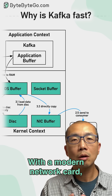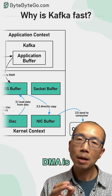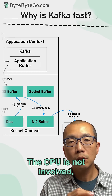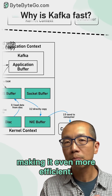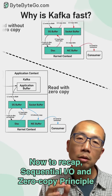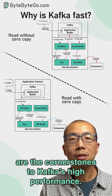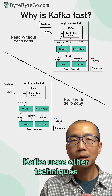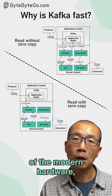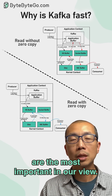With a modern network card, this copying is done with DMA — direct memory access. When DMA is used, the CPU is not involved, making it even more efficient. To recap, sequential IO and zero copy principle are the cornerstones of Kafka's high performance. Kafka uses other techniques to squeeze every ounce of performance out of modern hardware, but these two are the most important.